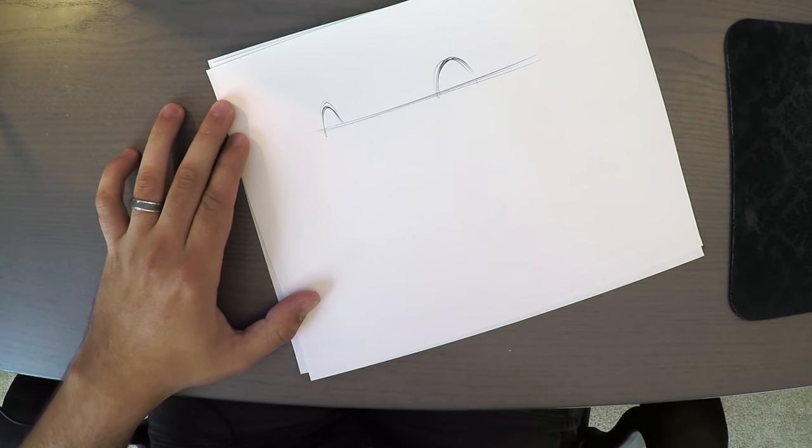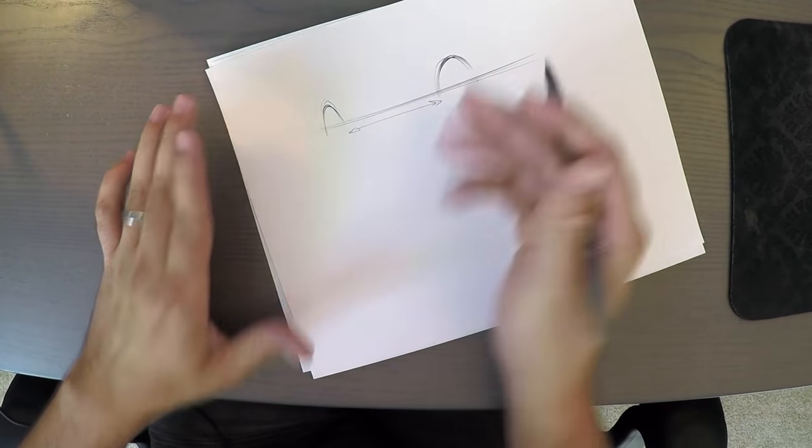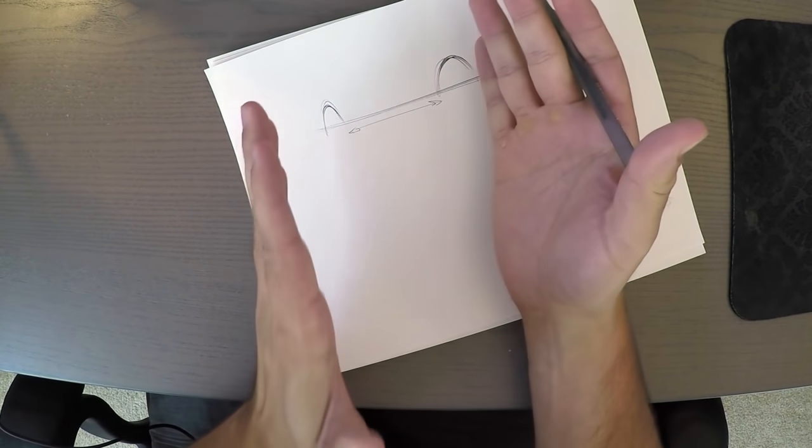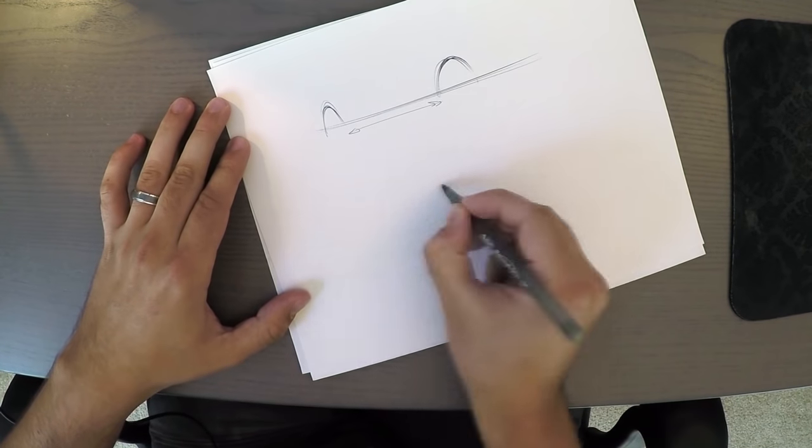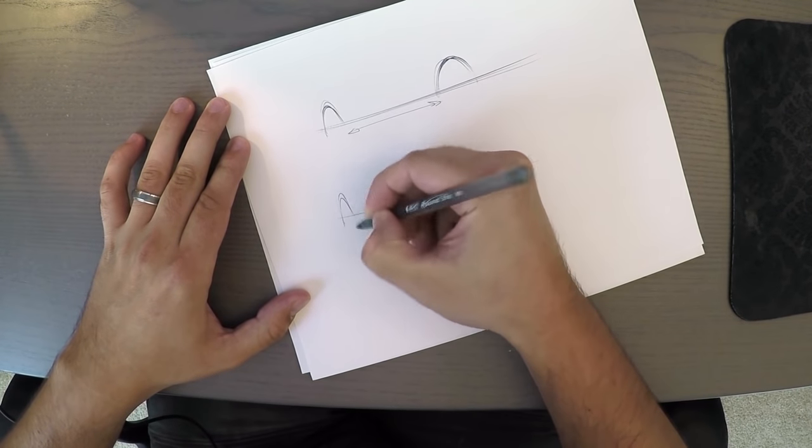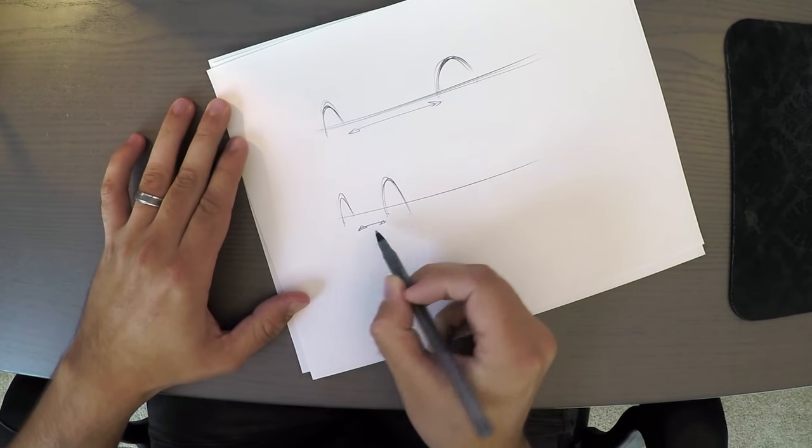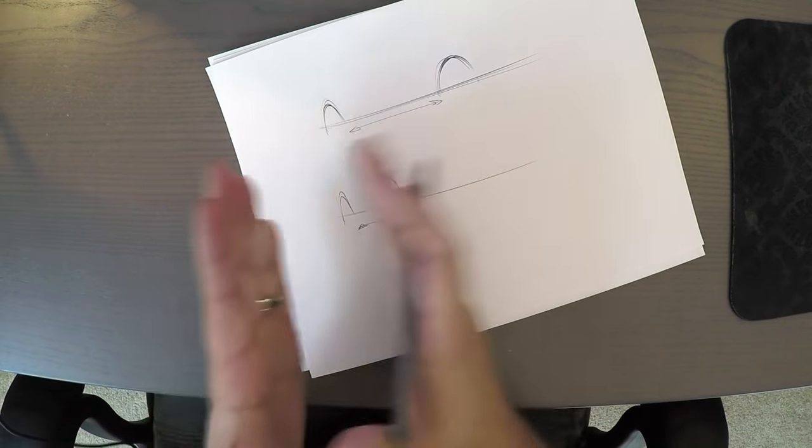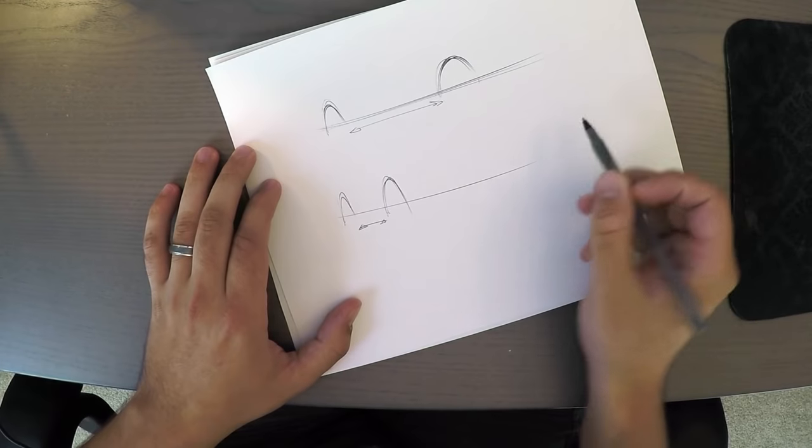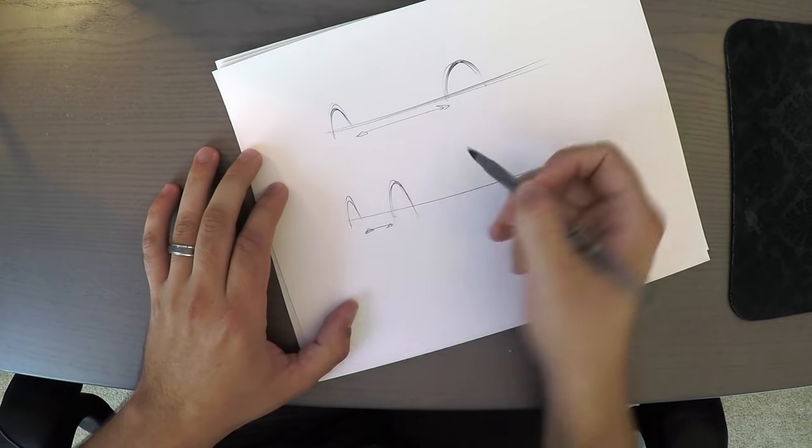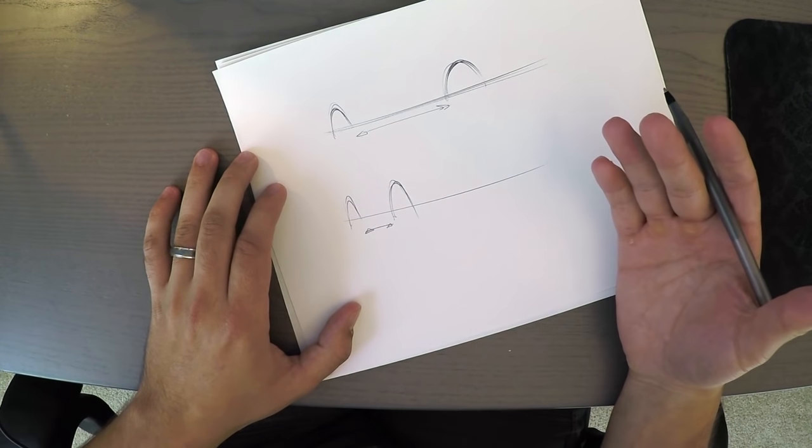This will be the rear, so you see this distance here will determine what angle you're looking at this car. For example, we could have done something like this as well. The distance here now is completely, or a lot more narrow than we have here, which means that we're going to see a lot more of the rear end of this car than we would here.